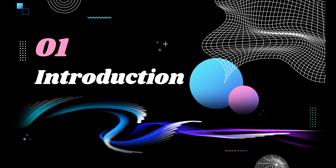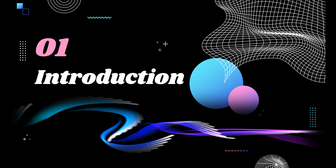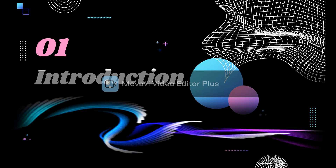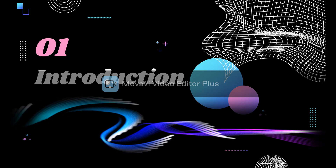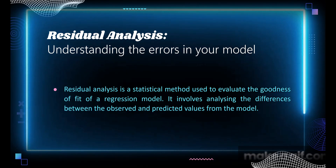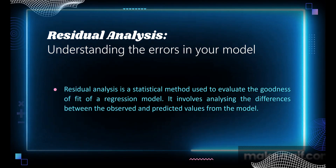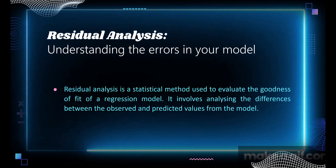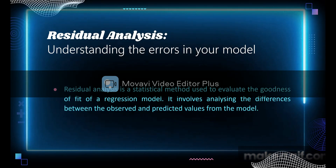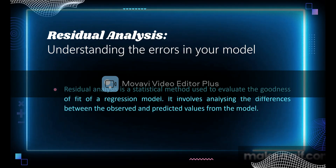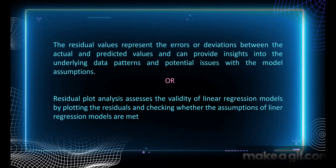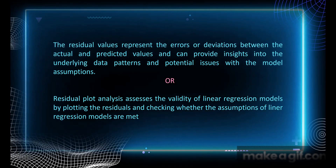Moving forward to the introduction — when we fit a statistical model to a set of data, we are trying to find a relationship between one or more independent variables and a dependent variable. This relationship can be used to make predictions about the dependent variable based on the values of independent variables. However, no model is perfect and there will always be some degree of error or variability in the predictions of the model. Residual analysis is a way to examine this error and determine whether the model is a good fit for the data.